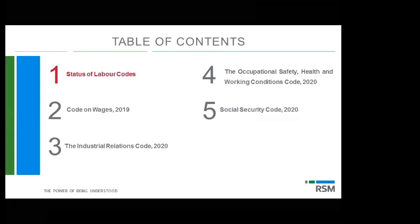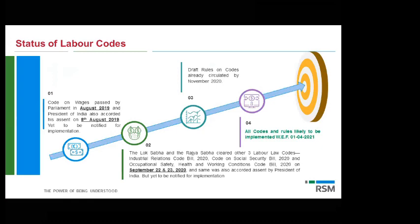We'll be discussing all four codes in brief, especially the key changes which will have some impact on operations of our companies. The first code — the Code on Wages — was passed in 2019 and received assent on 8th August 2019. The remaining three codes were approved in September 2020 and received presidential assent also in September 2020. The draft rules were circulated in November 2020 and in all likelihood the codes will be effective from 1st April 2021.